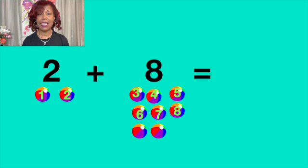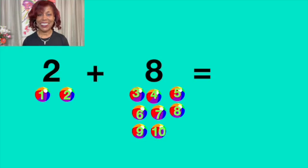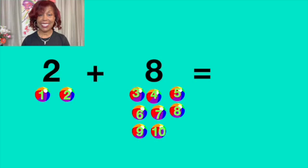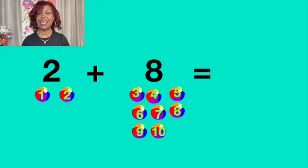Nueve, nine. Diez, ten. Dos más ocho igual a diez. Two plus eight equals to ten. Diez, ten.